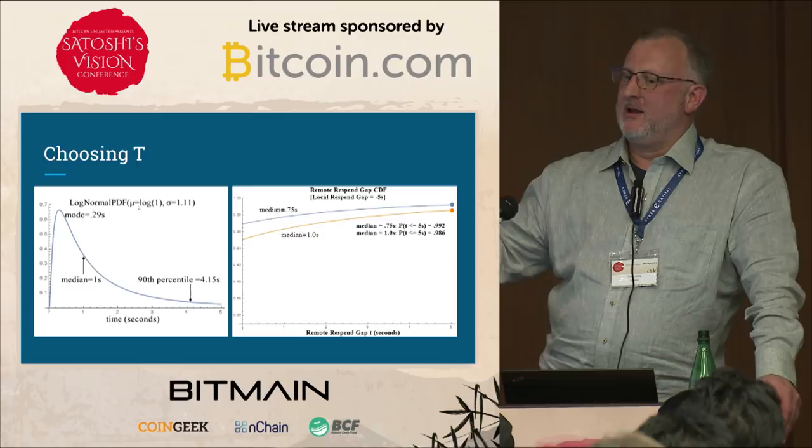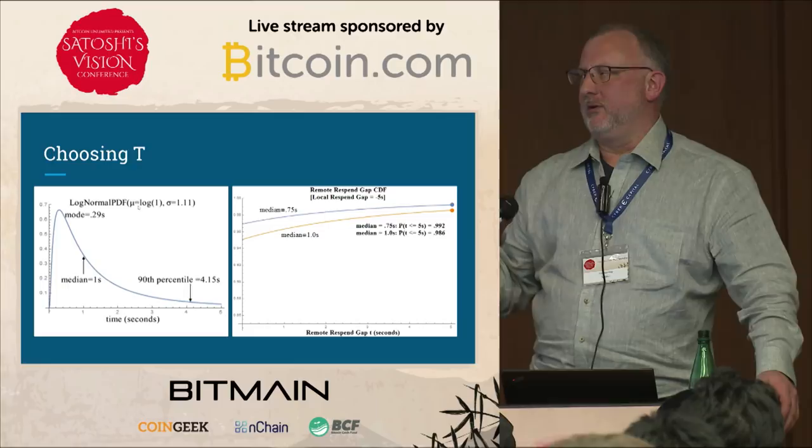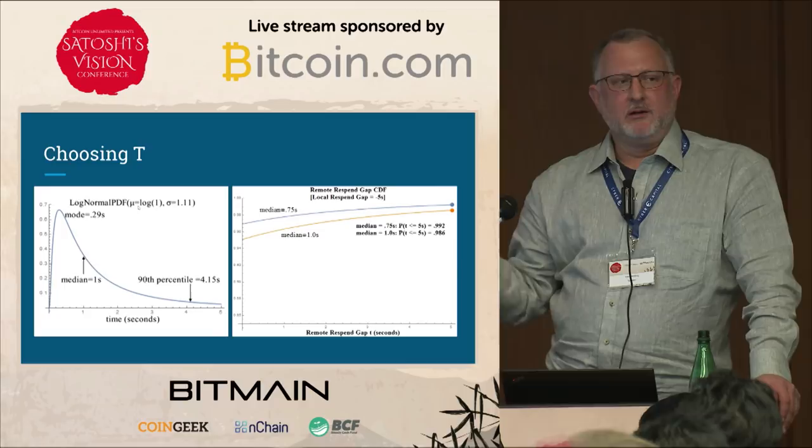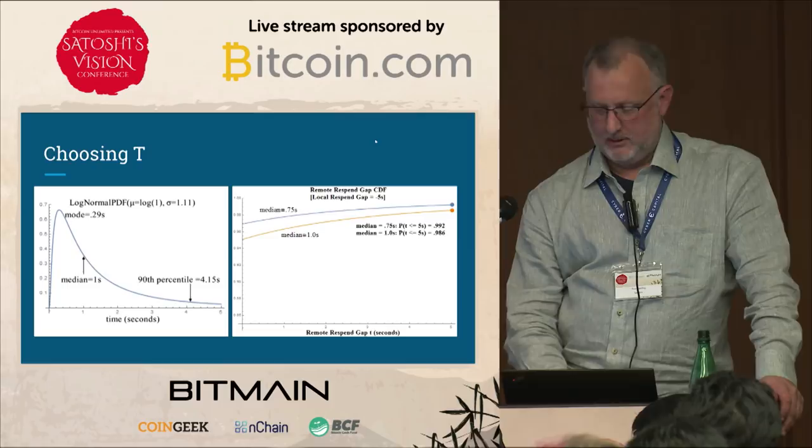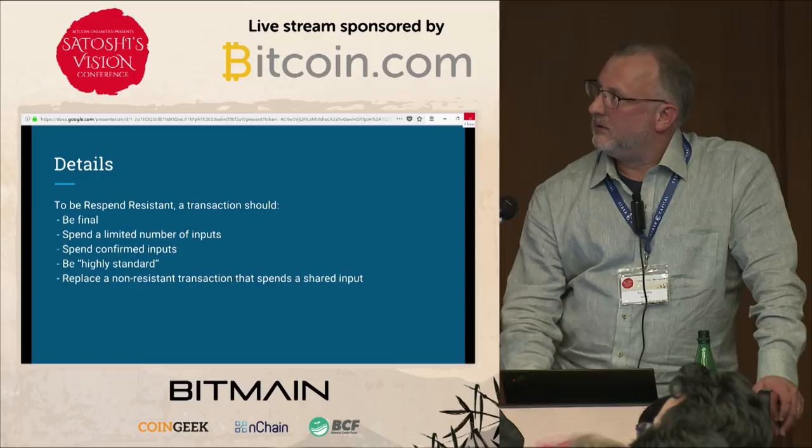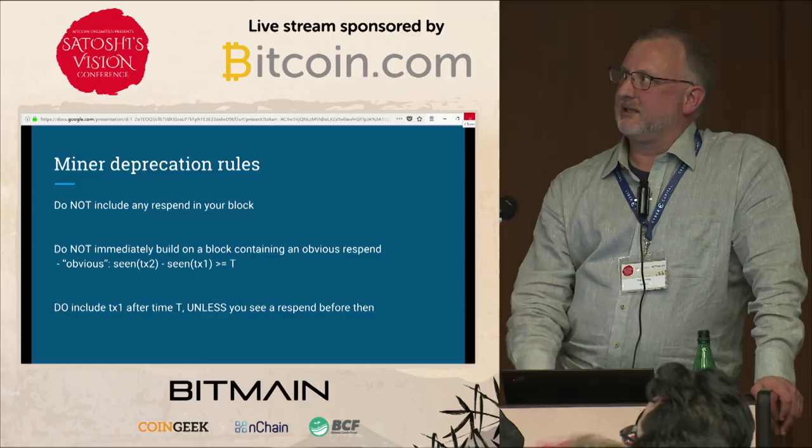Right now this is still very opaque — only a tiny subset of the network forwards double spends. If we can get more nodes doing it, we'll be able to gather more data before making the rules any harder or more set in stone.